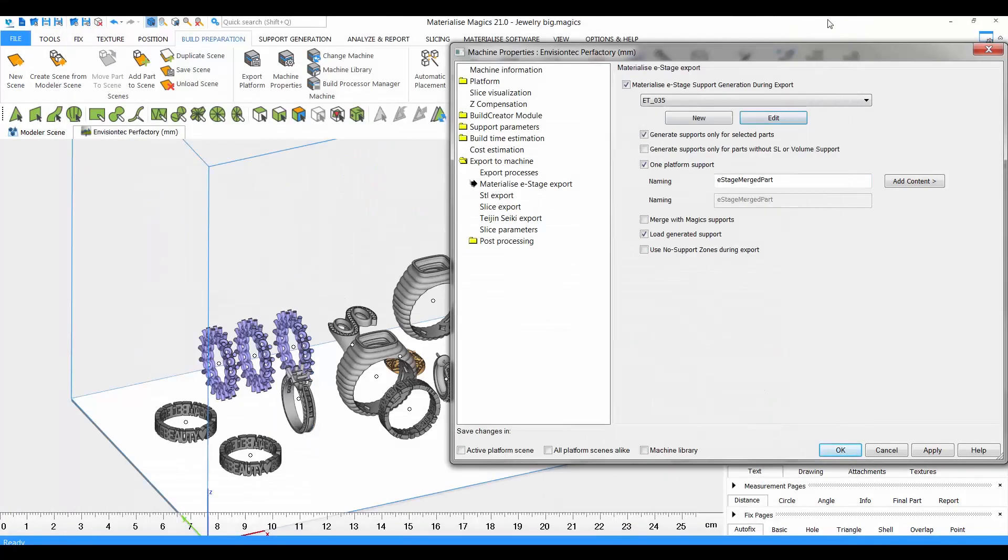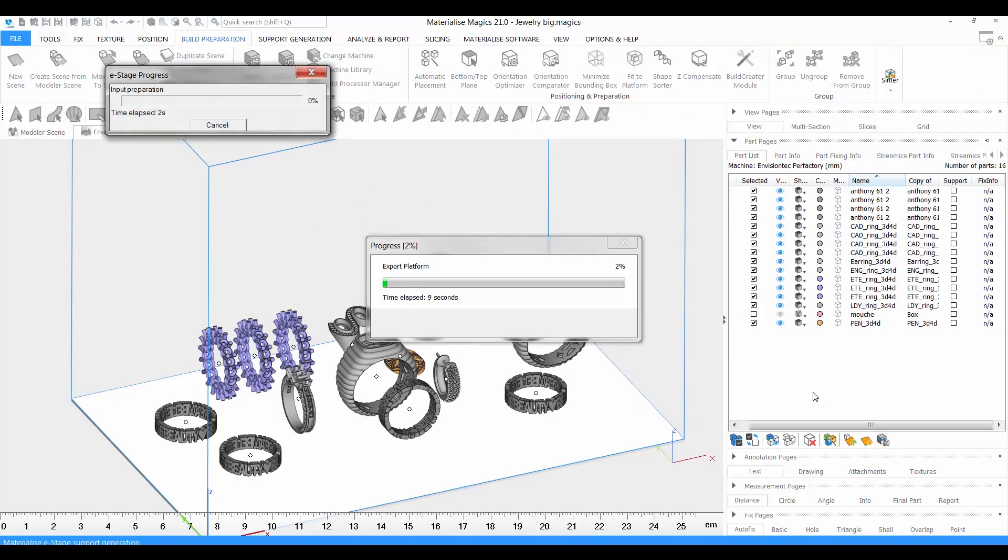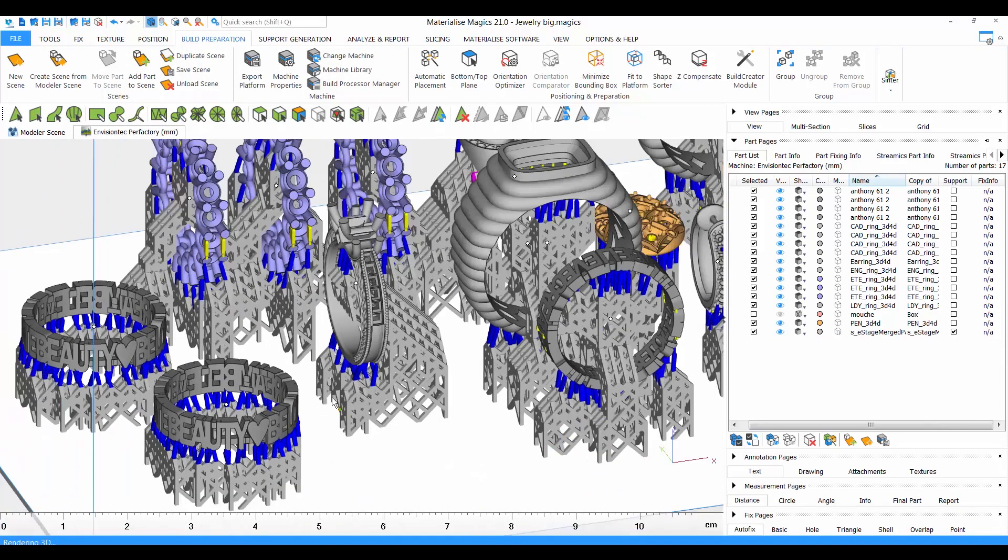Materialise eStage for DLP is an efficient and intelligent support generation software that can be a lifesaver when working with DLP systems.